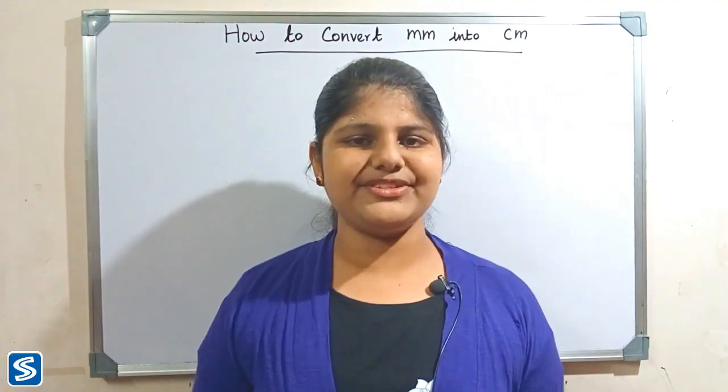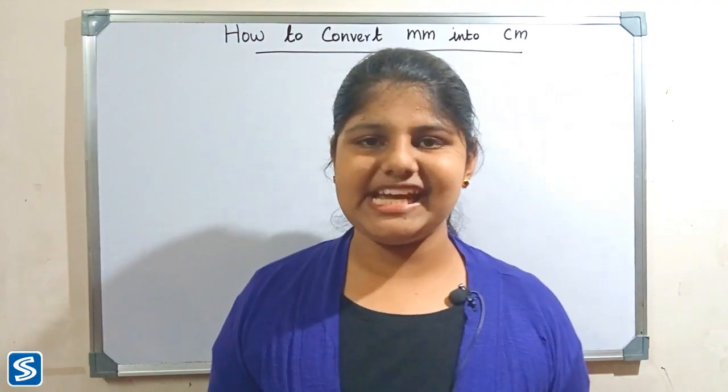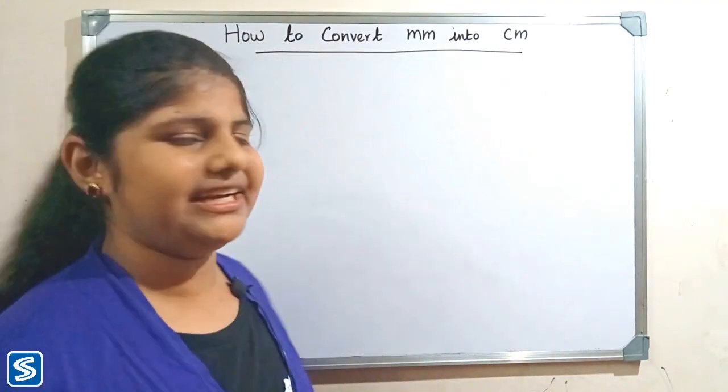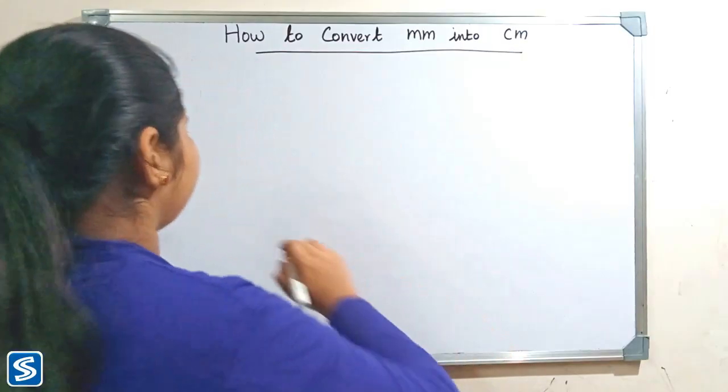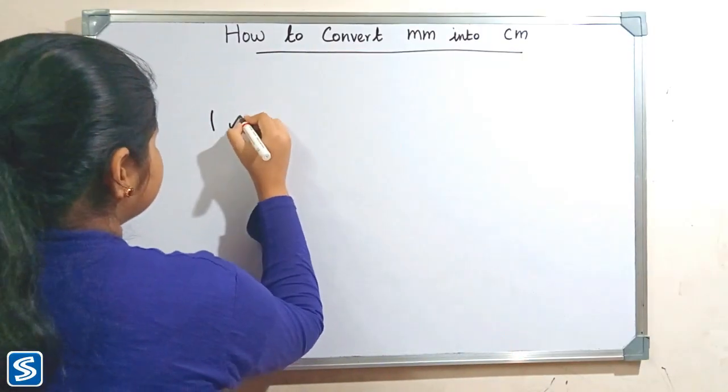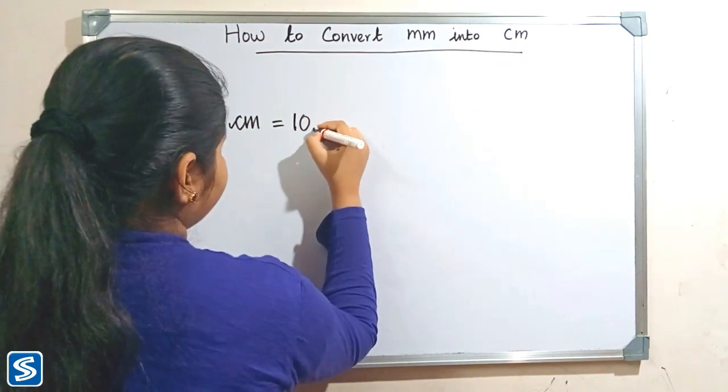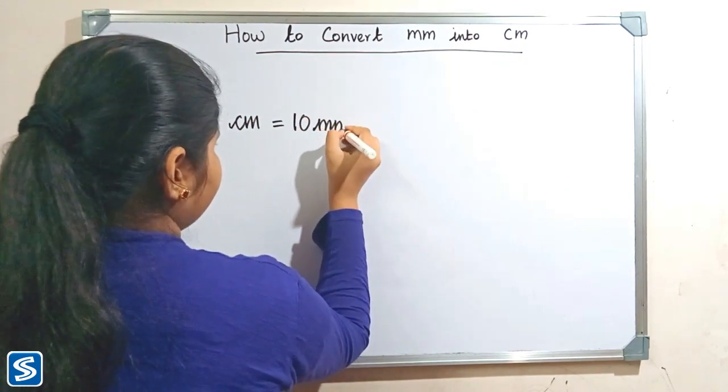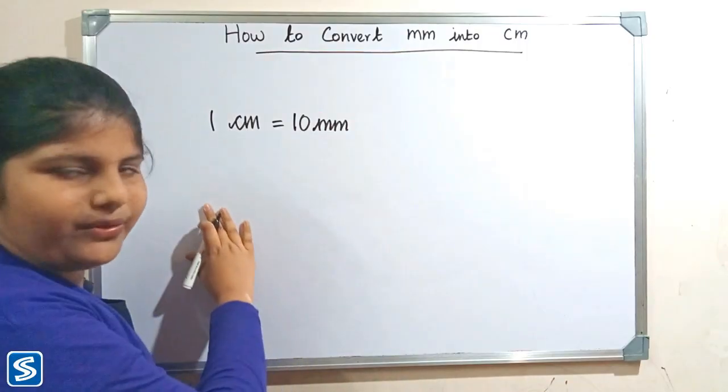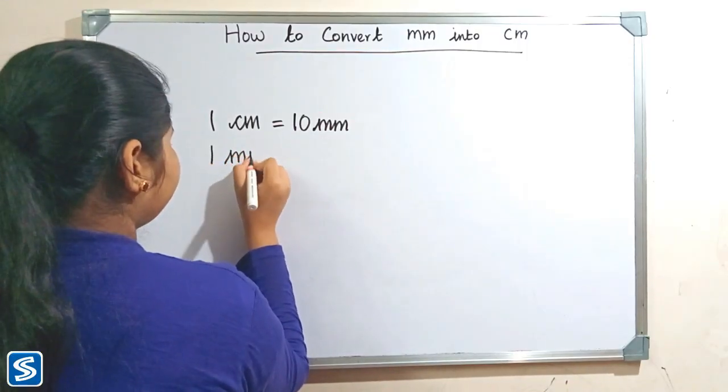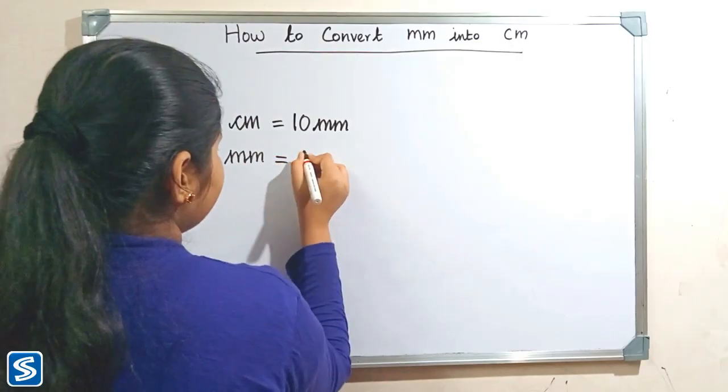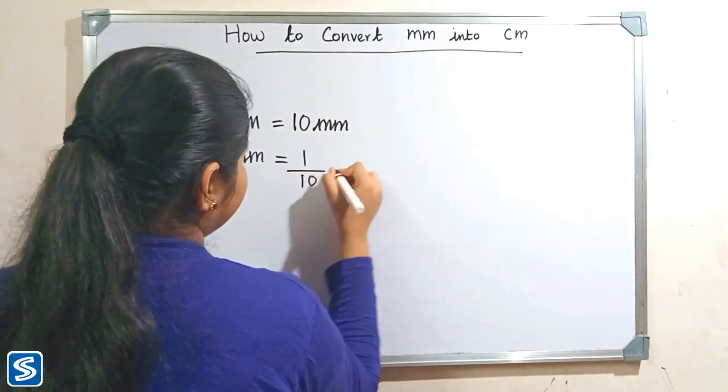Hi friends, welcome to so much channel. I'm going to teach how to convert millimeter into centimeter. We already know that one centimeter is equal to 10 millimeter, so one millimeter is equal to 1 by 10 centimeter.